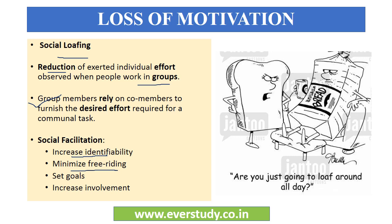Dousra solution hai setting goals. According to Harkins and Simmons, groups jo clear and explicit goals establish karte hai, they tend to outperform groups jinn ka koi objective ya goal set hi nahi hai. Definite goals set karne se it is believed to stimulate an array of production enhancing processes, jis se commitment badhti hai group mein, planning achi se hoti hai, monitoring achi se hoti hai, in turn effort bhi jo lagaye jaate hai woh improved hoti hai. Group goals clear hone ke saath, they should be challenging too, which requires full collaboration from all the group members.